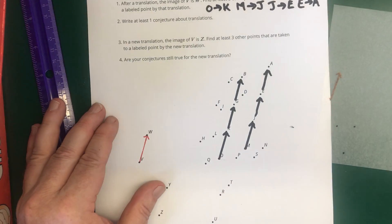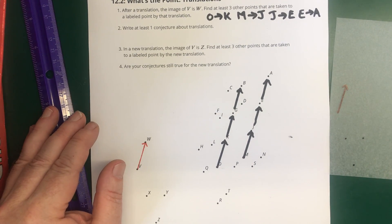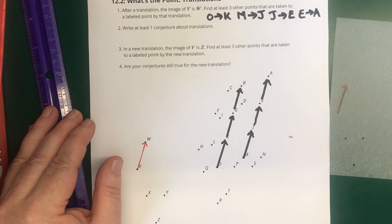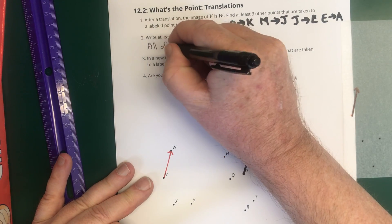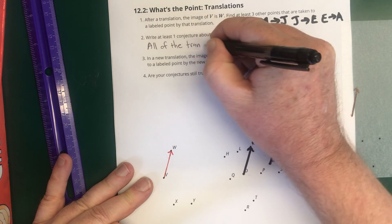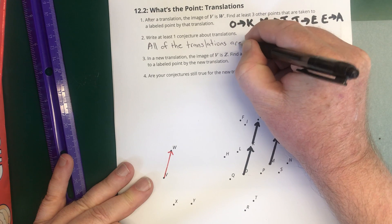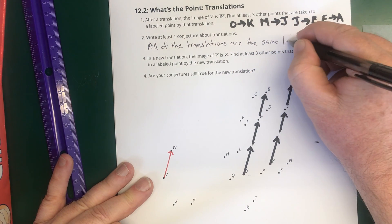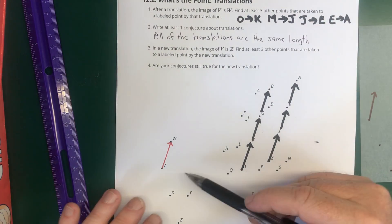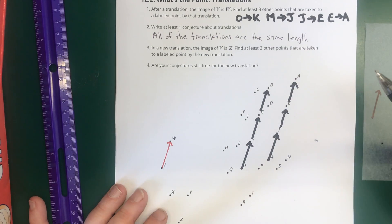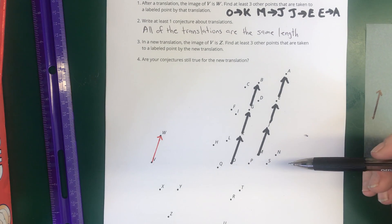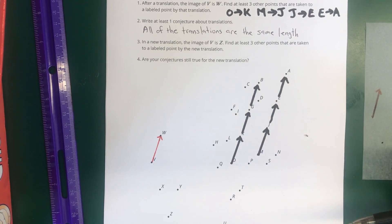So when we look at this, what is something that looks like it's true? So a lot of my students came up with all of the translations are the same size length. So everything moved by the same distance. Whatever this distance is from V to W, that's how far O moved, that's how far K moved, that's how far G moved. And then maybe if we look at these lines, maybe there's some other conjecture we could come up with. But I'm going to leave it to you to figure out if there's any conjecture you can make there.